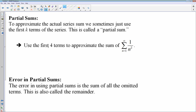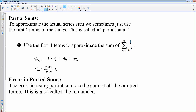For example, if I wanted to use only the first four terms to estimate the sum of 1 over n², my terms are 1 over 1² plus 1 over 2² plus 1 over 3² plus 1 over 4². We add those four terms together using a calculator and get 205 over 144, or approximately 1.423. That would be the partial sum.